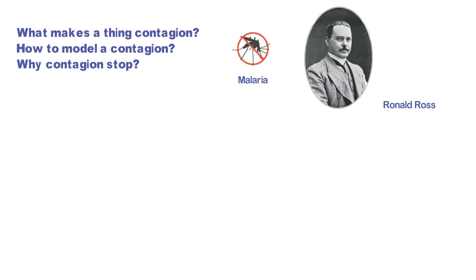Eventually, in July 1897, he designed a test to prove the theory. He won the Nobel Prize because of his achievement. It is difficult to overstate the importance of Ross's finding. The award of the Nobel Prize hardly does justice to the subsequent impact of his conclusions.